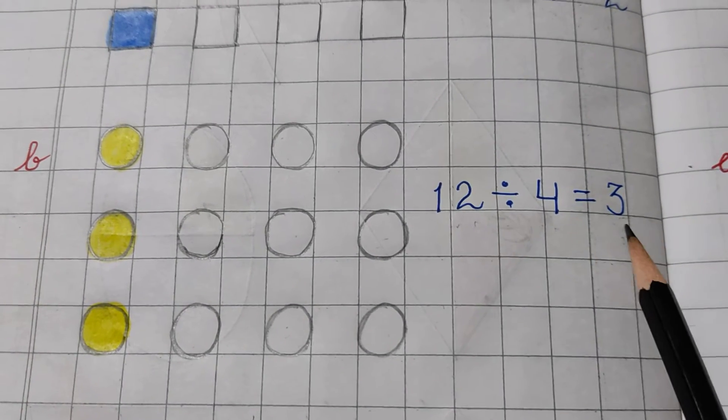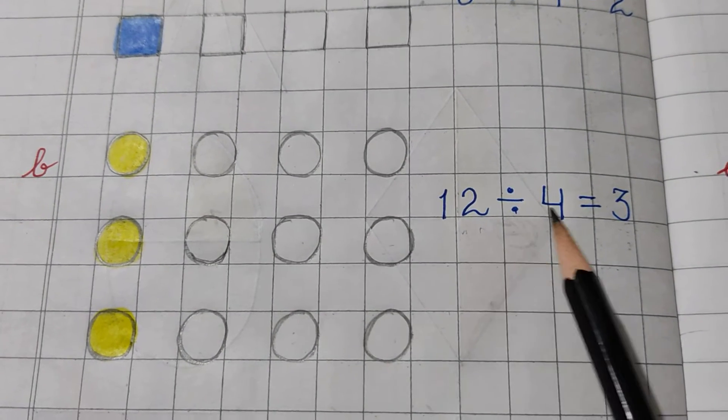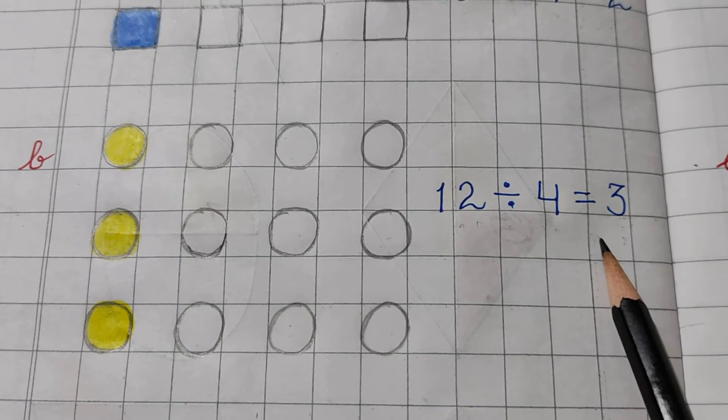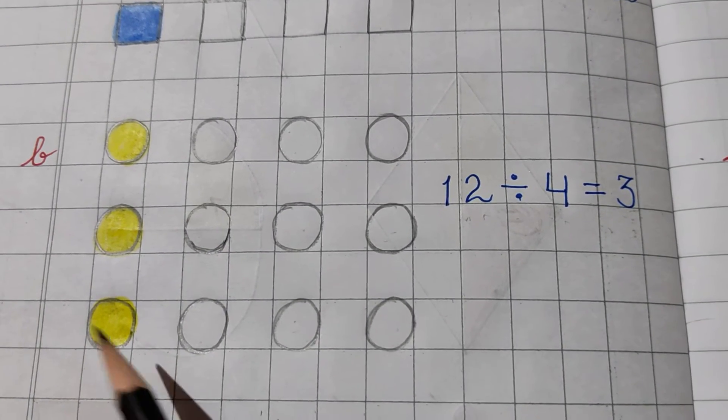That means, 3 is the one-fourth of 12. 12 ka one-fourth 3 hota hai. Okay? You can see, I have colored 3 circles here.